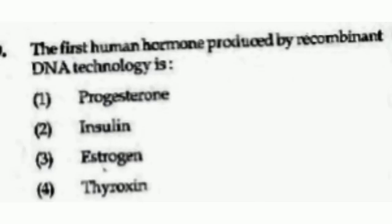The first human hormone produced by recombinant DNA technology is — options are progesterone, insulin, estrogen, or thyroxine. The right answer is option number 2, Insulin.